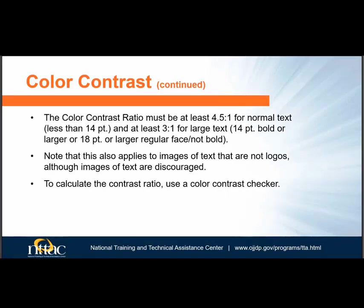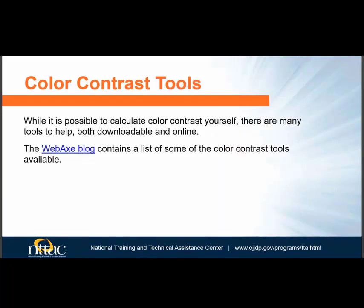The foreground color must be at least 4.5 times brighter or darker than the background color. Larger text can have a slightly lesser contrast ratio. You should use a color contrast checker tool to calculate the contrast ratio of foreground and background colors. All color contrast tools work on the same principle, but some use different codes for colors. Some can be downloaded, some are used online, and some are browser extensions. See the WebAIM blog page to view a list of some color contrast tools.